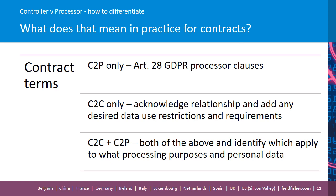So, what does that mean for your contracts? If you have a controller-to-processor relationship only, then the contract terms you'll want to make sure are in there are the Article 28 processor clauses. Article 28 of the GDPR lists a host of things that you need to reflect in your agreements with processors. If it's a controller-to-controller agreement, then you would most likely want to acknowledge that relationship — so it's not controller to processor, it's controller to controller.